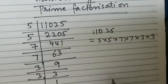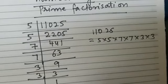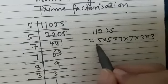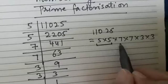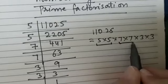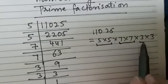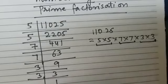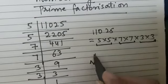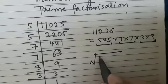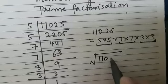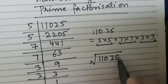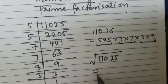Now the second step is to make pairs of prime factors such that both factors in each pair are equal. So we can make the pair 5 × 5, then 7 × 7, and then 3 × 3. For writing the square root, we write: square root of 11,025 is equal to...